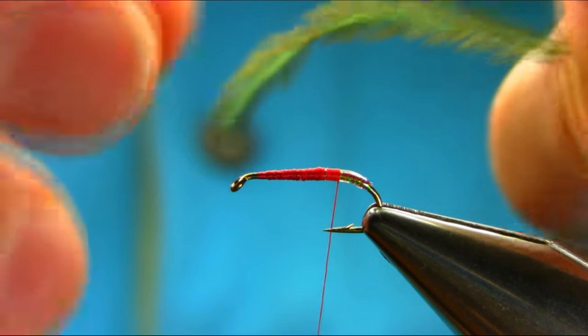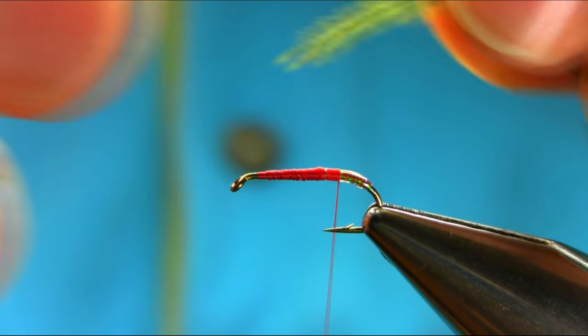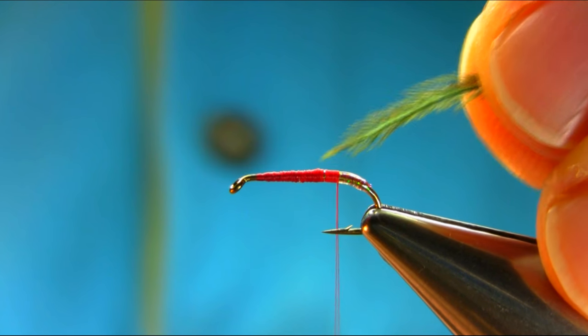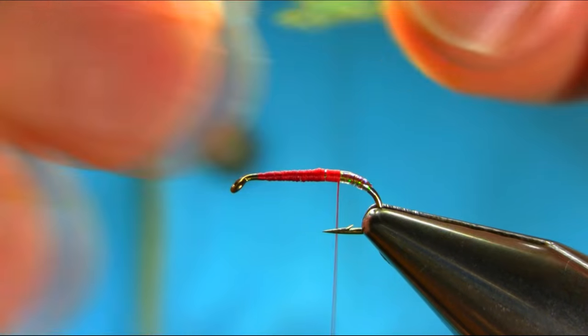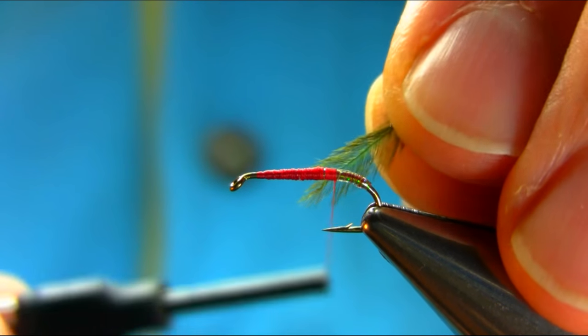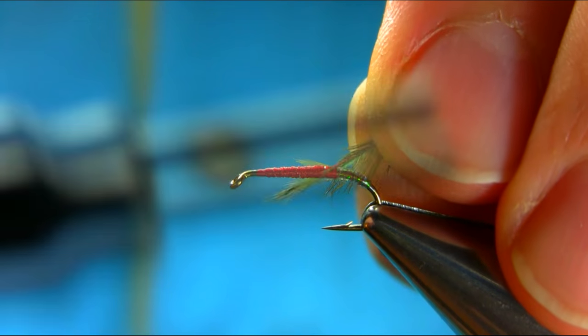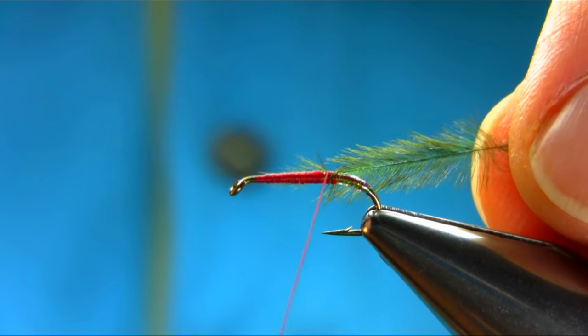Now I'm going to add an ostrich herl dyed olive for the body. Just catch it from the tip, the top end, with touching turns.